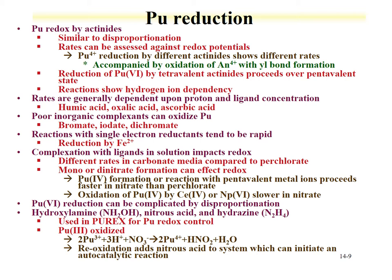The oxidation state of plutonium is very important to control and understand. Plutonium can undergo redox reactions with other actinides, similar to disproportionation, and the rates have been assessed. For instance, reduction of plutonium-6 by tetravalent actinides proceeds over the pentavalent state — going from the 6 to the 5 to the 4 — and these reactions tend to show a hydrogen (acid) dependency. If acid is produced, keeping your plutonium in an acidic environment can limit any change in redox.